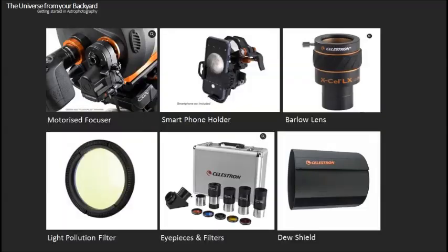No telescope is complete as it comes — you're always going to need additional bits of equipment with any telescope you buy, even really expensive ones. There are various accessories worth considering for almost any telescope. A motorized focuser is really one of the best accessories you could buy — it allows you to focus the telescope without having to physically touch it, and I would go as far as to say it's an essential piece of equipment for serious astrophotography.